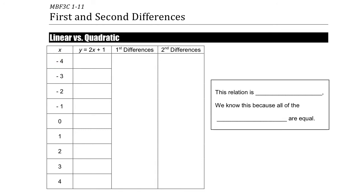If x is minus 4, what is the value of y? Well, y is equal to 2 times whatever x is, plus 1. So if x is minus 4, 2 times minus 4 is minus 8, plus 1, that's minus 7. And if x is minus 3, it's 2 times minus 3, which is minus 6, plus 1 — that's minus 5. Spend the next minute to figure out what the rest of the table of values is.